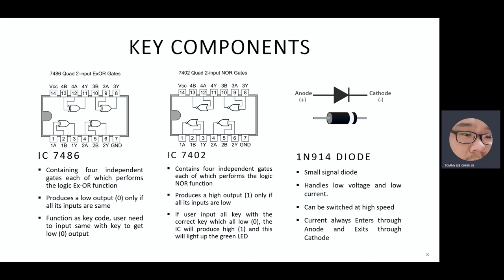The second logic gate here is the NOR gate, which is IC7402. It contains four independent gates of each which performs the logic NOR function. So it will produce a high output, which is one, only if all its inputs are low. And if user input all key with the correct key, which all low, zero, the IC will produce high, one. And this will light up the green LED.